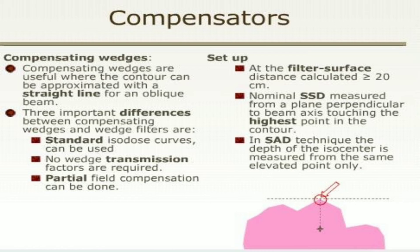Compensating wedges are useful where the contour can be approximated with a straight line for an oblique beam. Three important differences between compensating wedges and wedge filters are: first, standard isodose curves can be used; second, no wedge transmission factors are required; third, partial field compensation can be done. As a filter, surface distance is calculated greater than or equal to 20 cm. Nominal SSD is measured from a plane perpendicular to the beam axis stretching to the highest point in the contour. In SCD technique, the depth of the isocenter is measured from the same elevated point only.